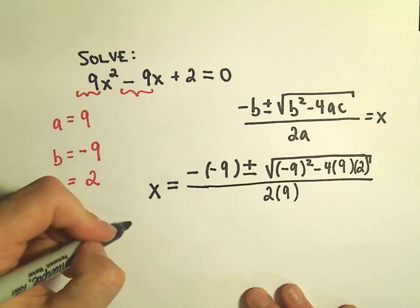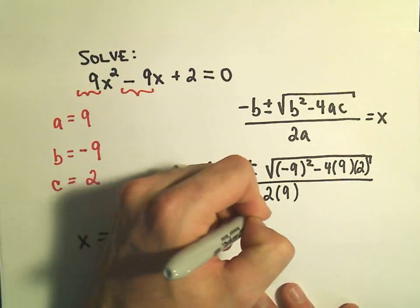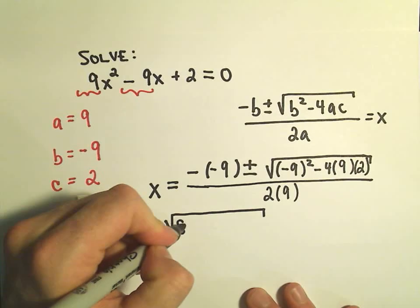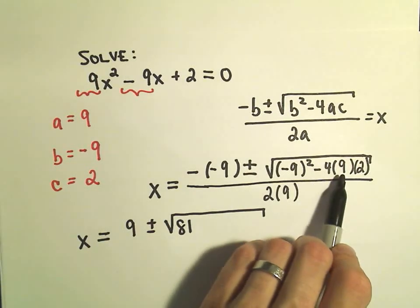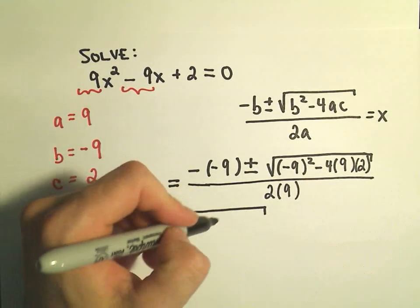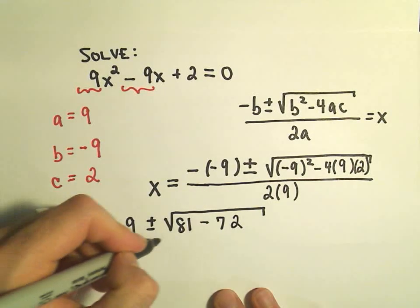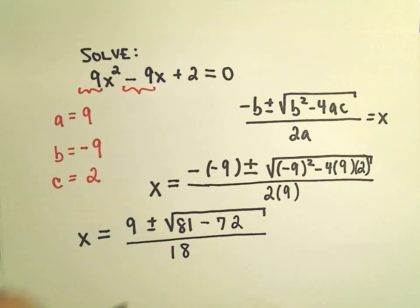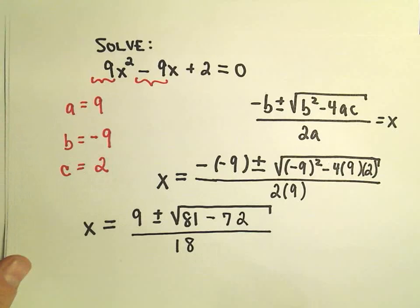We have negative of negative 9, which is positive 9, plus or minus the square root. Negative 9 times negative 9 is going to give us positive 81. If we take negative 4 times 9, that will be negative 36, and then negative 36 times positive 2 will be negative 72. In the denominator, we have 2 times 9, which is going to be 18.